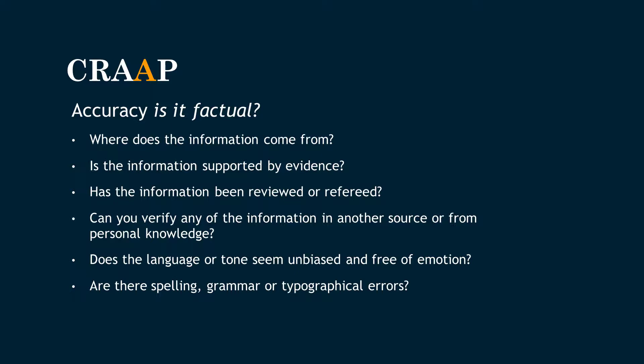The second A is for accuracy. I like to break this down into two types of accuracy. The first is factual accuracy — can you verify any of the information in another source? This is called lateral fact checking, or from personal knowledge. Has the source been peer reviewed? Is the information supported by sufficient evidence? Have they cited their sources? You can look for a references section. The second type of accuracy is grammatical. If a source has spelling, grammar, or typographical errors, that's a big indicator that this source is not reliable.